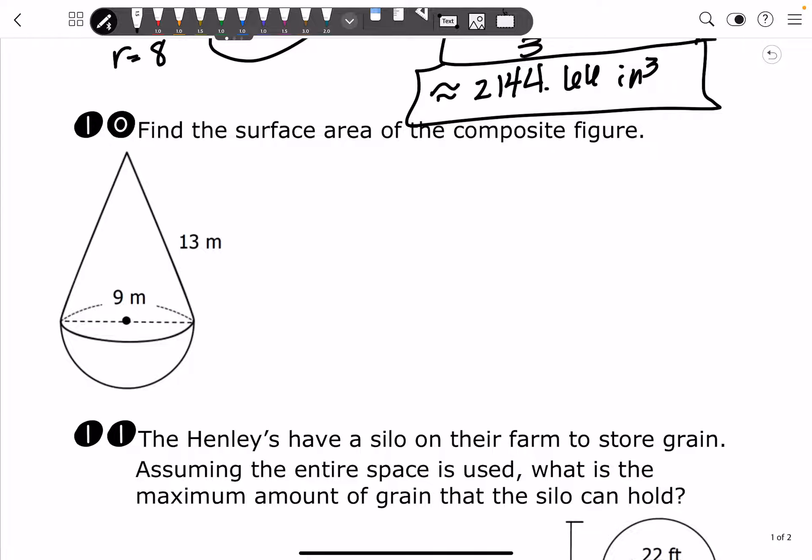Alright, number 10. We're going to find the surface area of the composite figure. So right here, we've got two different shapes that we're looking at. We're looking at a cone. And then we're looking at a hemisphere right here. It's almost like an upside down ice cream cone right here.